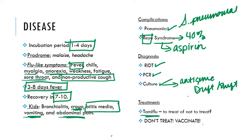For treatment, Tamiflu is an option. Most people have uncomplicated illness and will recover, but for pregnant women, immunocompromised individuals, people over 50, or anyone who might have trouble clearing the virus, Tamiflu is recommended if still within the treatment window. Better than treating, however, is vaccination. While the vaccine doesn't always hit spot on each year, it does ameliorate the course of infection, and getting a yearly flu vaccine is really important.